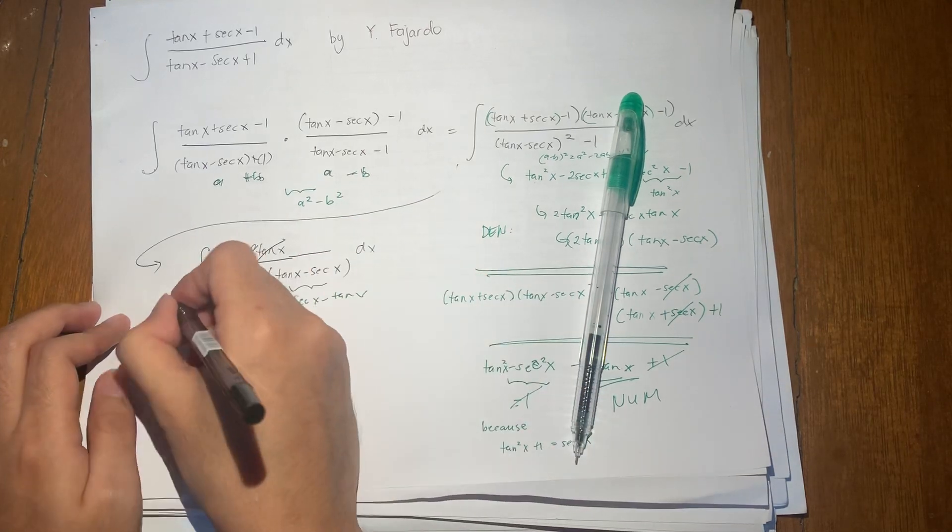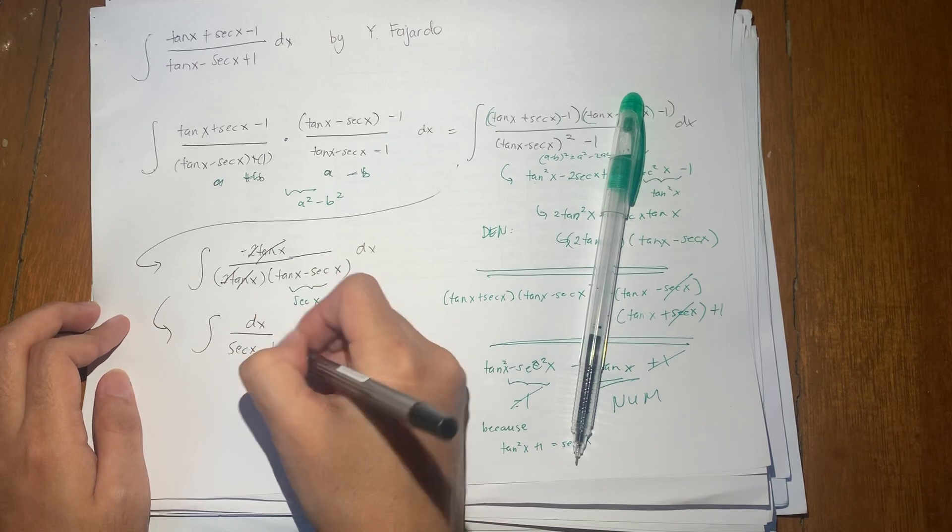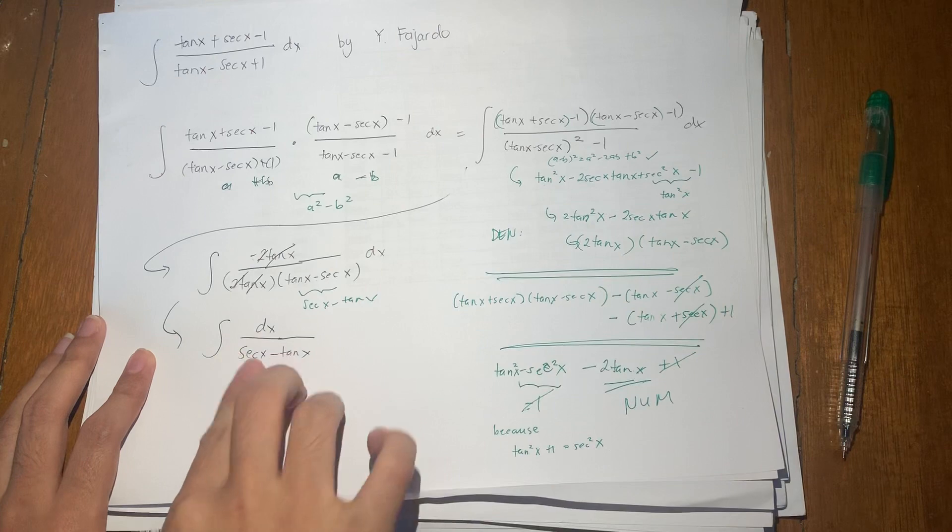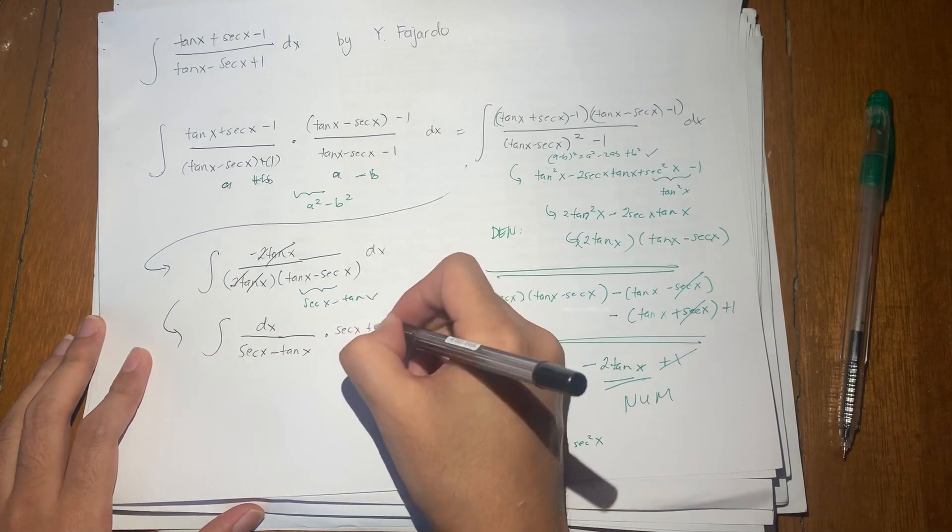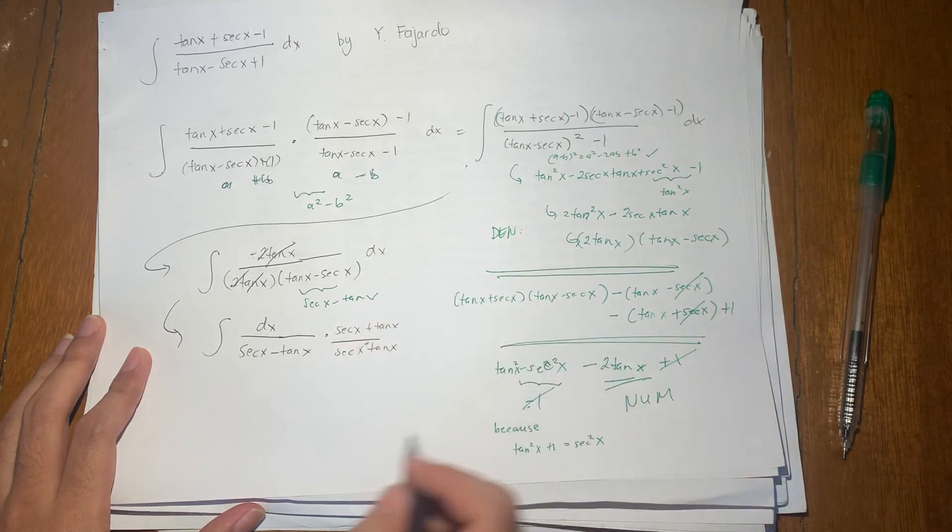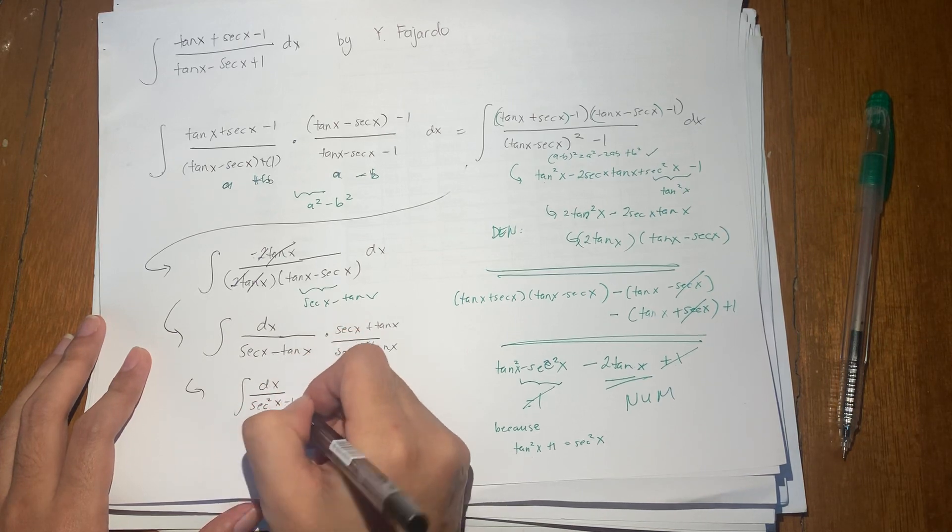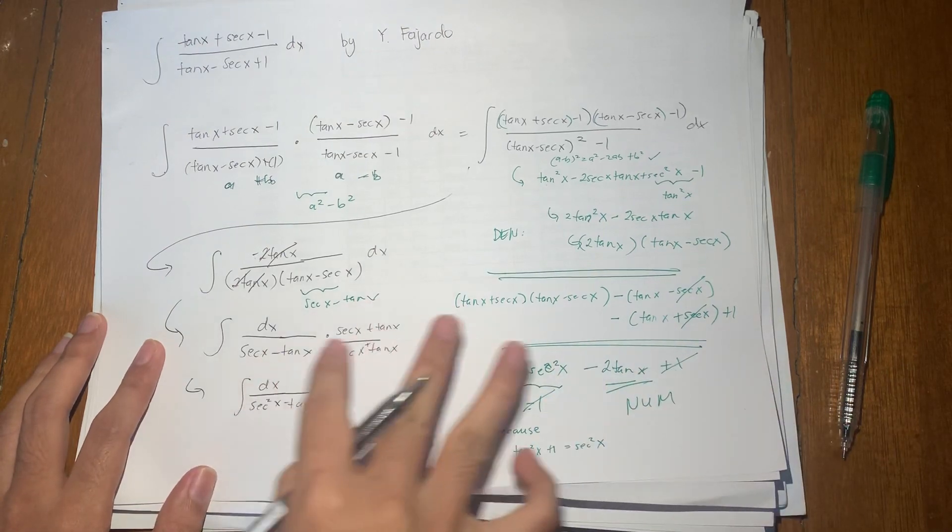So we are left with the integral of dx over secant x minus tangent x. So again, I want to use again the conjugate method. So I want to multiply this by the conjugate, times secant x plus tangent x. So this becomes dx over secant squared x minus tangent squared x, difference of squares a minus b, a plus b.